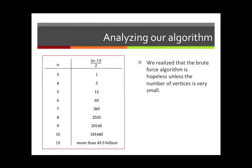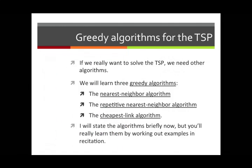If you really want to solve the traveling salesman problem, it's not really a satisfactory answer to say we just can't do it because there are too many possibilities. So we need to ask: are there other algorithms? If we really want to solve the traveling salesman problem, we will need to use some other sorts of algorithms. And the three algorithms that we're going to learn are all called greedy algorithms.